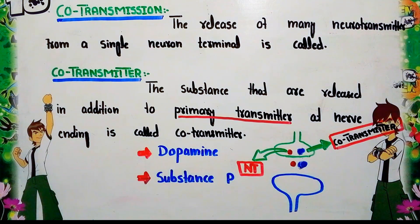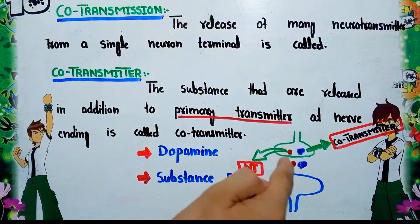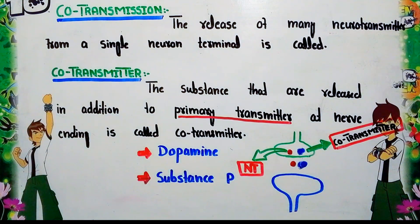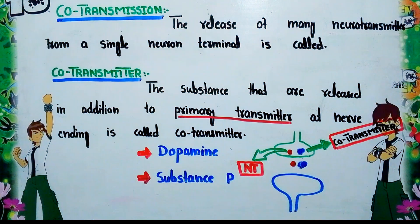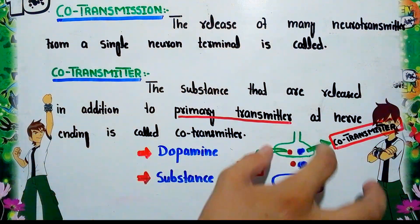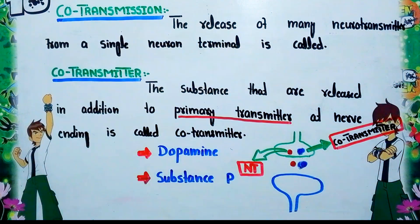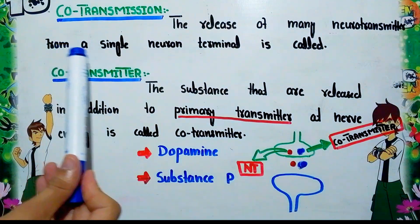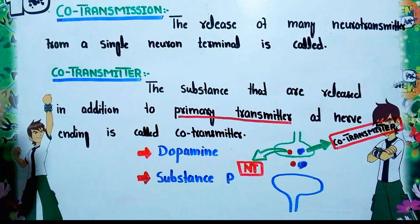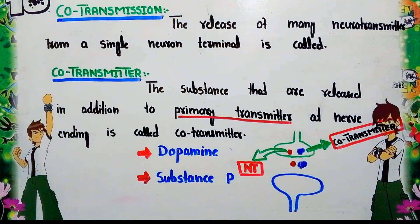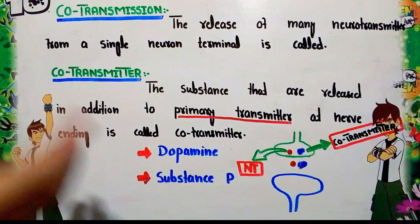For many years it was believed that a single neuron could release only one neurotransmitter, but now it is known that a single neuron is able to transmit many neurotransmitters. This phenomenon is called co-transmission — the release of many neurotransmitters from a single neuron terminal.